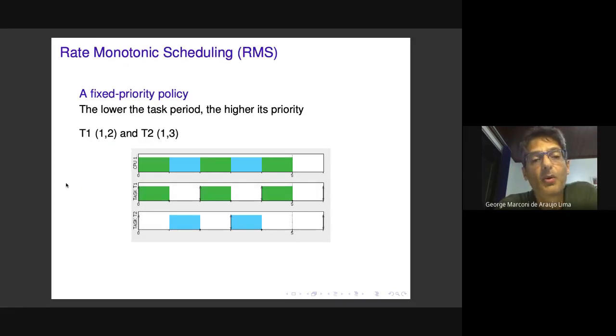This is an example of rate monotonic scheduling for a very simple task system. We have two periodic tasks: task one has a period of two, and task two has a period of three, meaning they are released periodically at two and three time units. In this example, they both require one time unit to execute and must meet their deadlines, which equal their periods.